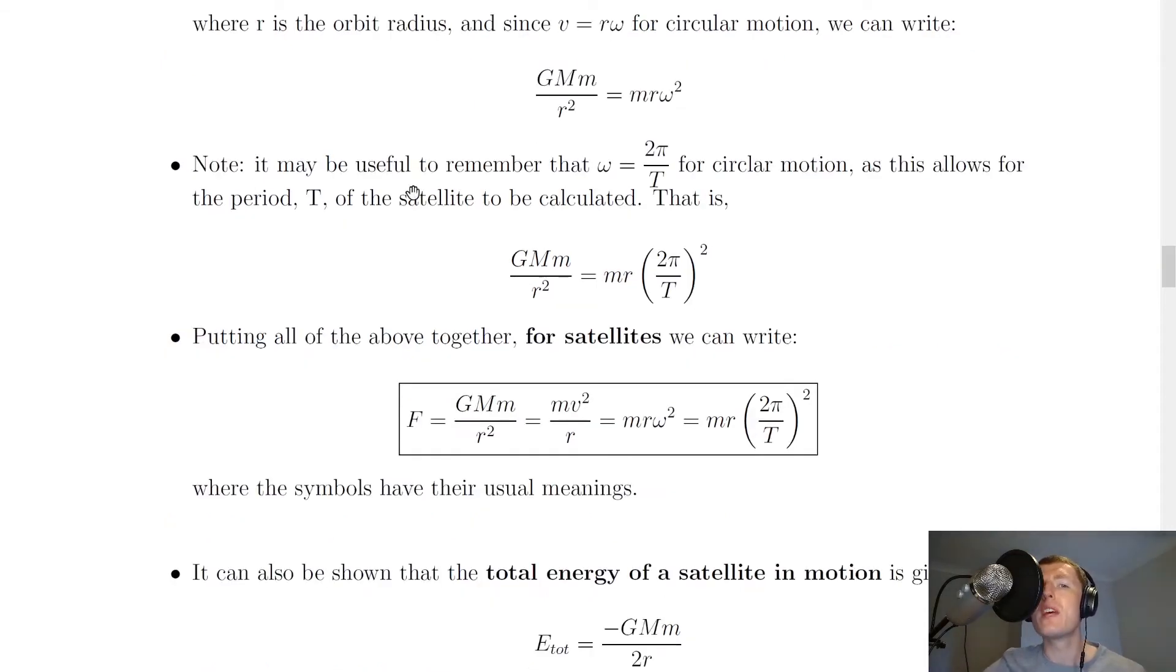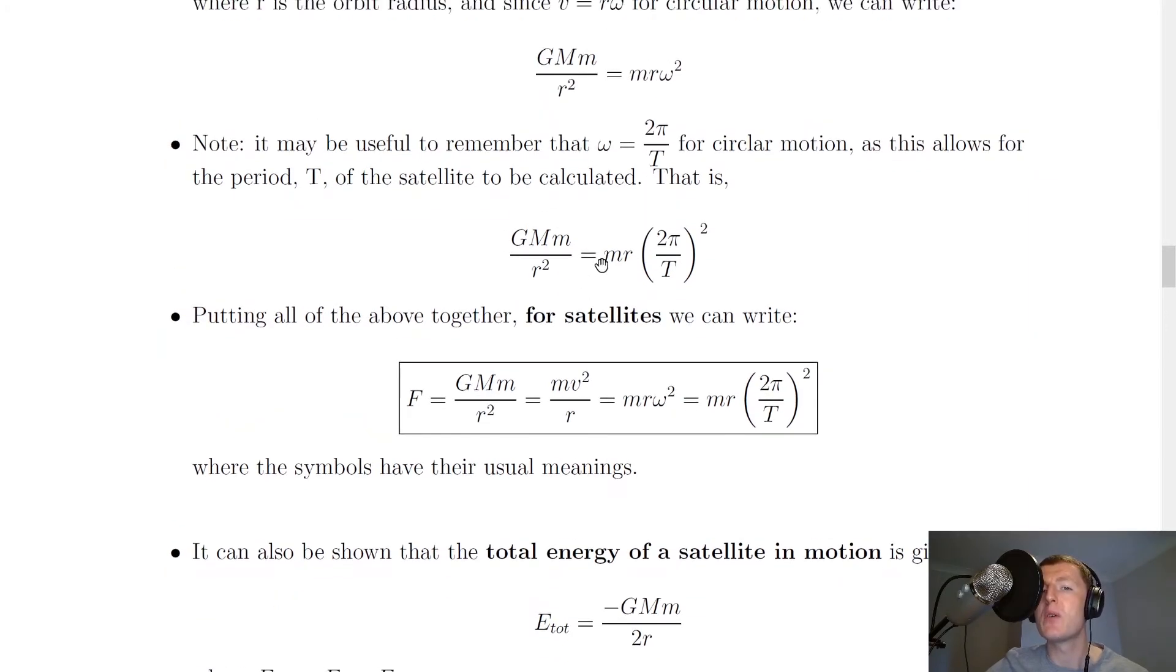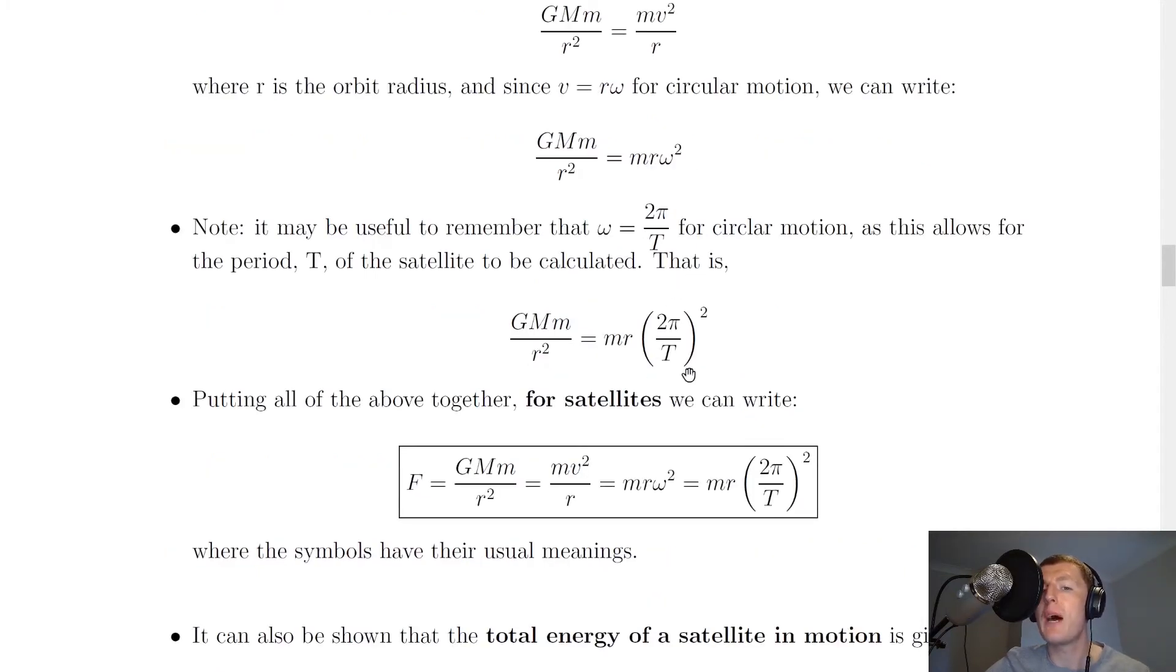Note that it may be useful to remember that ω = 2π/T for circular motion, as this allows the period T of the satellite to be calculated. That is, GMm/r² = mr(2π/T)², where we've substituted 2π/T for omega in this expression.